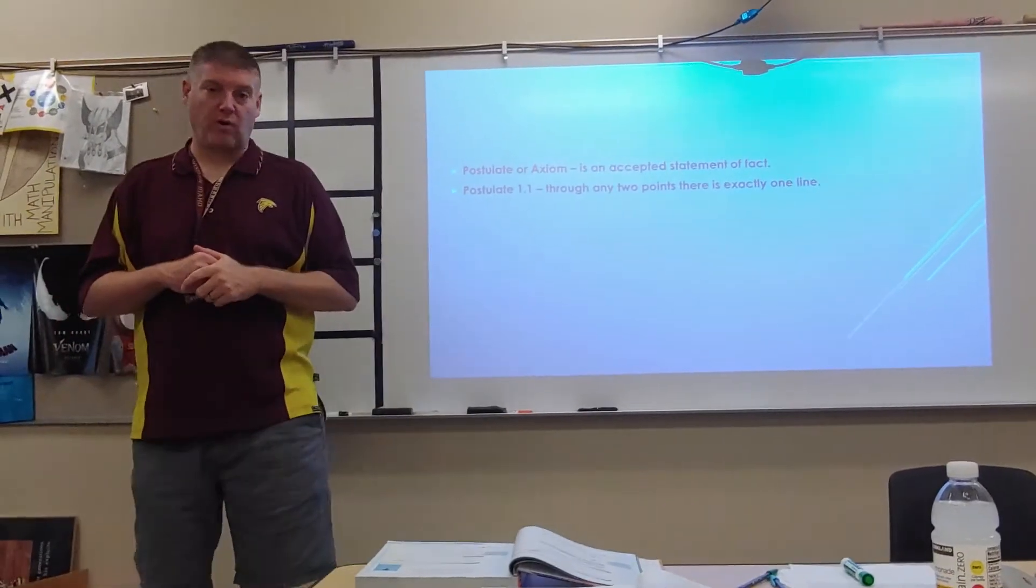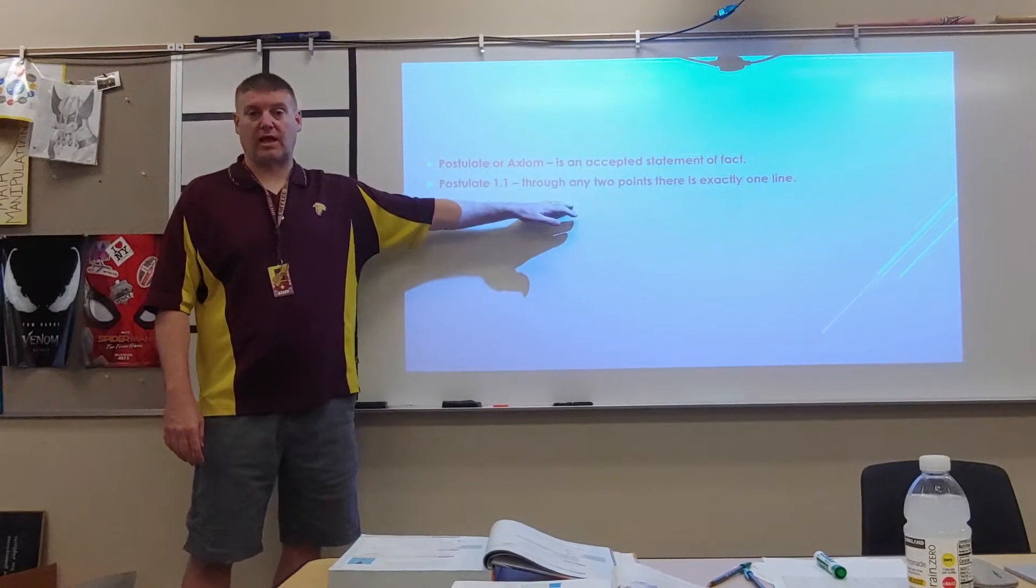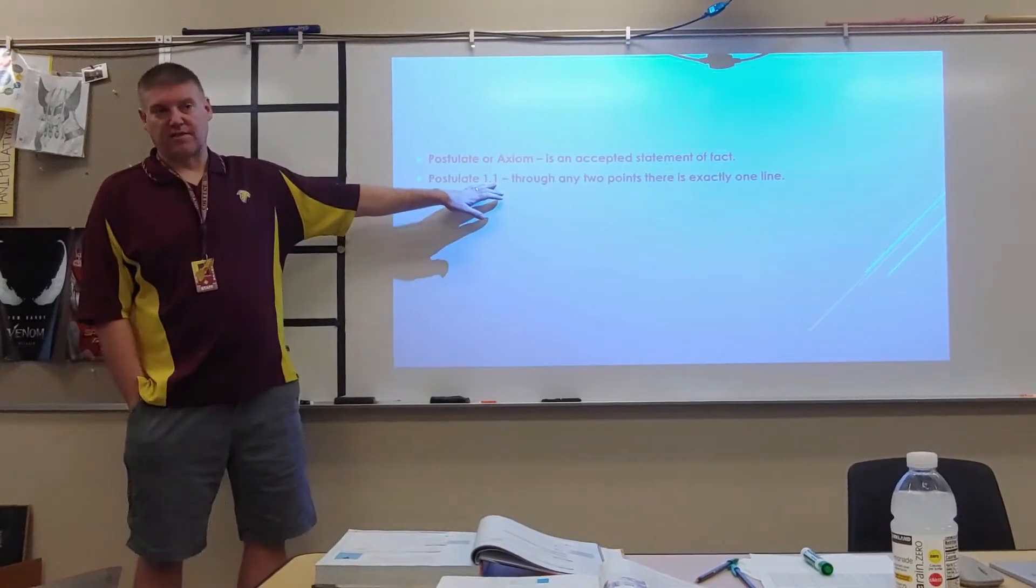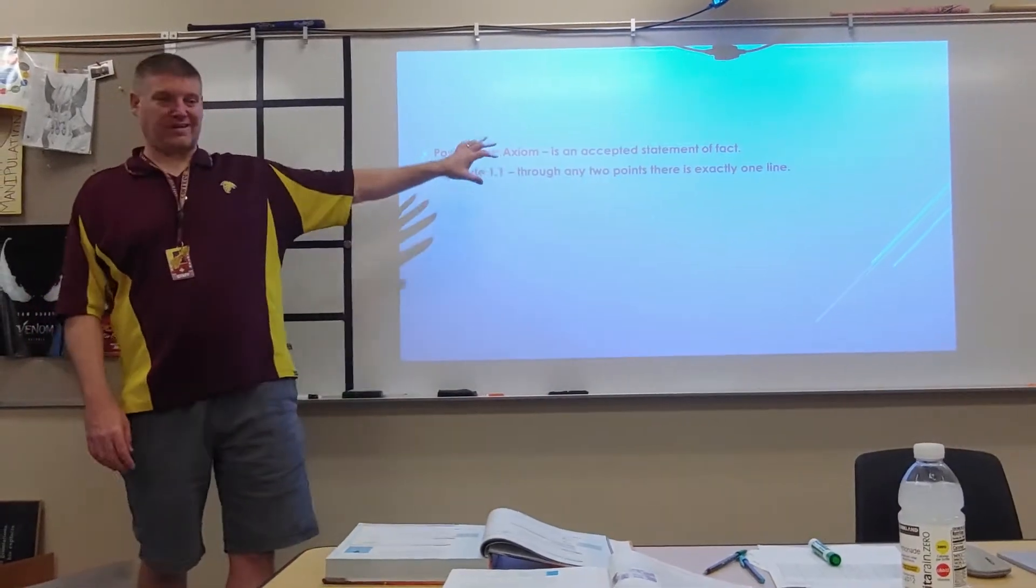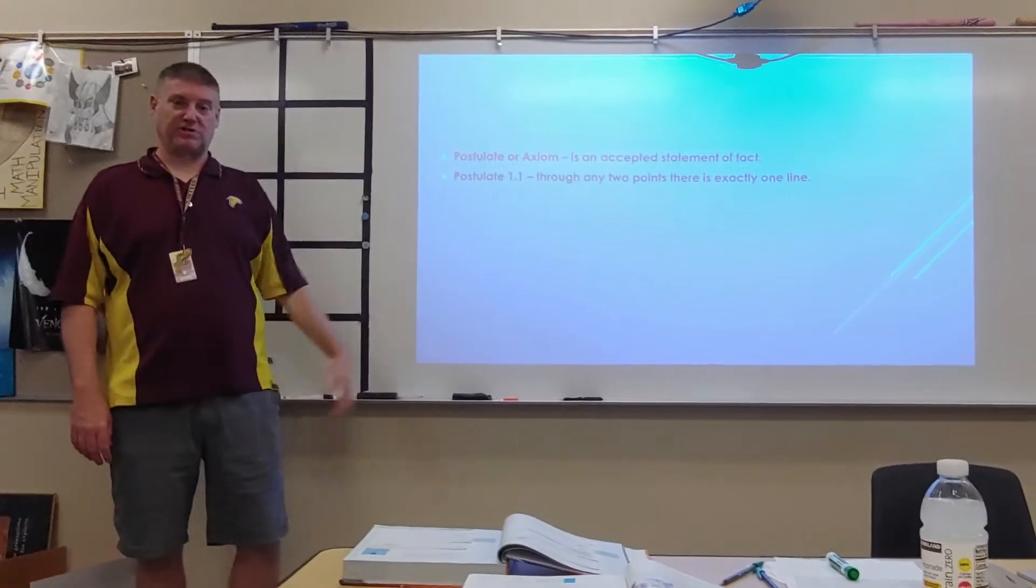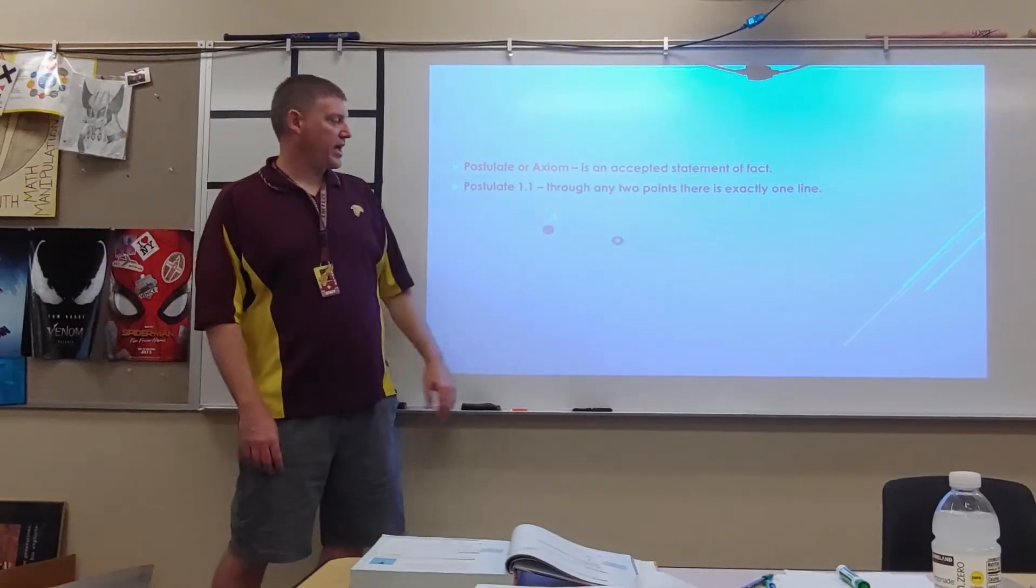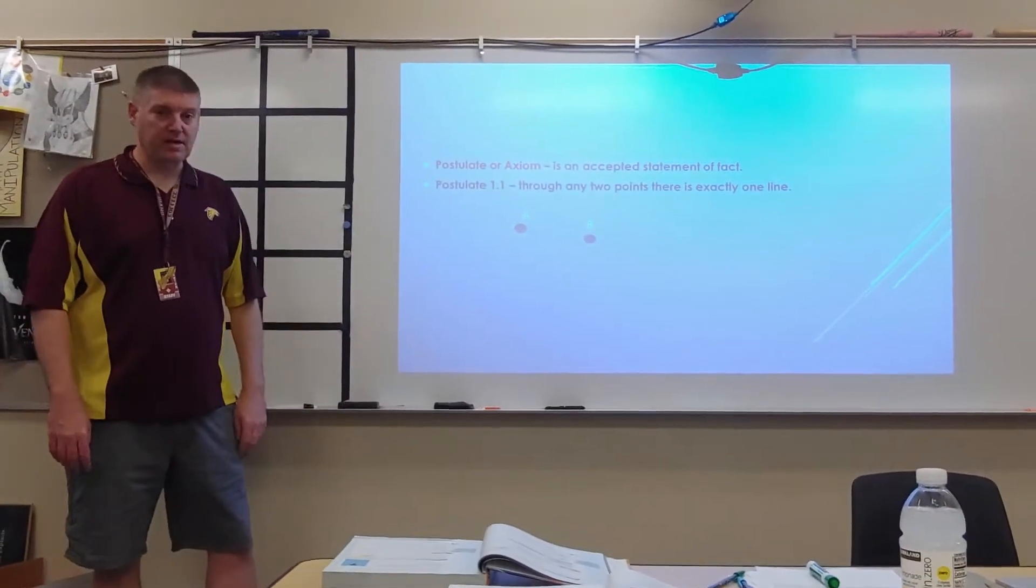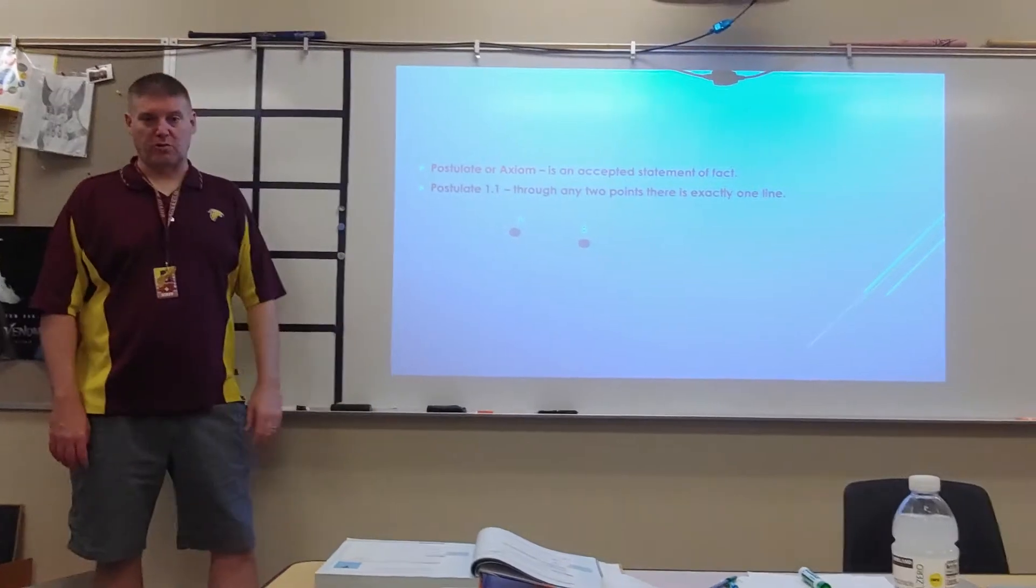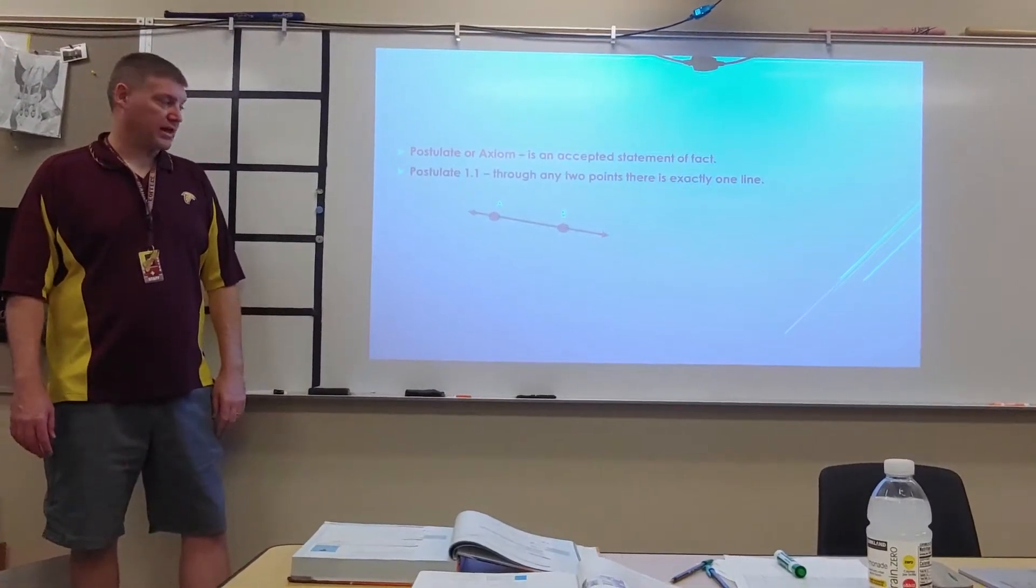Postulate 1.1: Through any two points, there's exactly one line. These postulate numbers here are only for our book. They could be different throughout. It's just saying that this is the first one we're coming to, chapter 1, first postulate. If I have point A and I have point B, there is only one line that connects those two points. That line is showing.